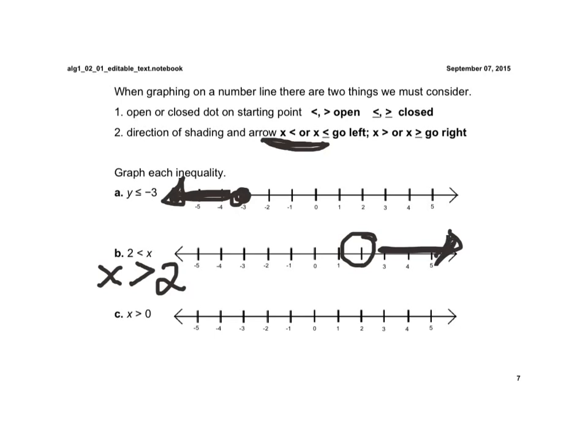And here, it's written in the form we need it to. It's x is greater than 0. So I go to 0, it's an open circle, and I shade to the right.